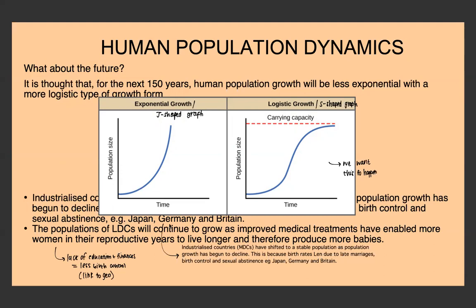But LDC populations continue to grow as medical treatments begin to improve, enabling more women in their reproductive years to live longer and produce more babies. In LDCs there's often a lack of education about contraception — why not to produce 10 children — and a lack of finances to access things like birth control.